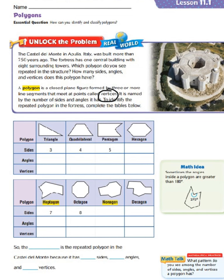Let's see what our hexagon has — one, two, three, four, five, six. So underneath our hexagon for sides, we put six. Now looking at angles: if we have three sides, we're also going to have three angles. Our quadrilateral has four angles, our pentagon has five sides and five angles, and our hexagon has six angles.